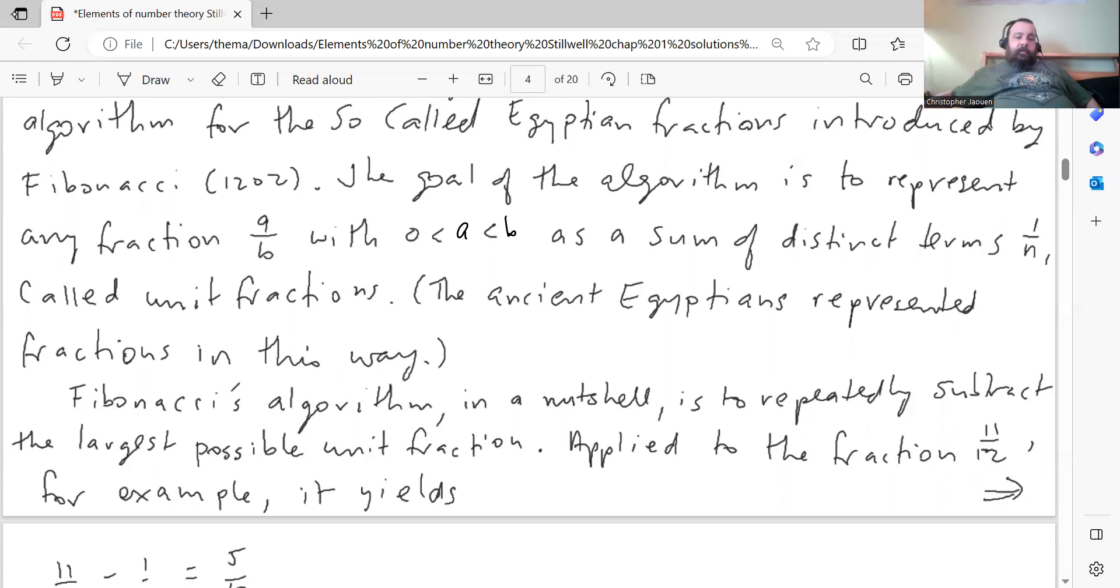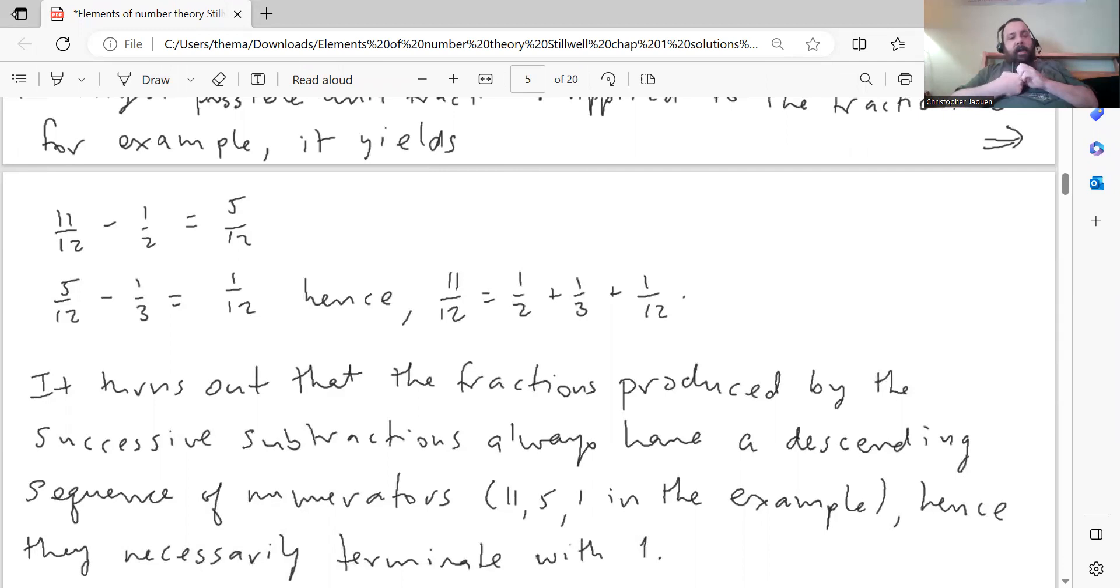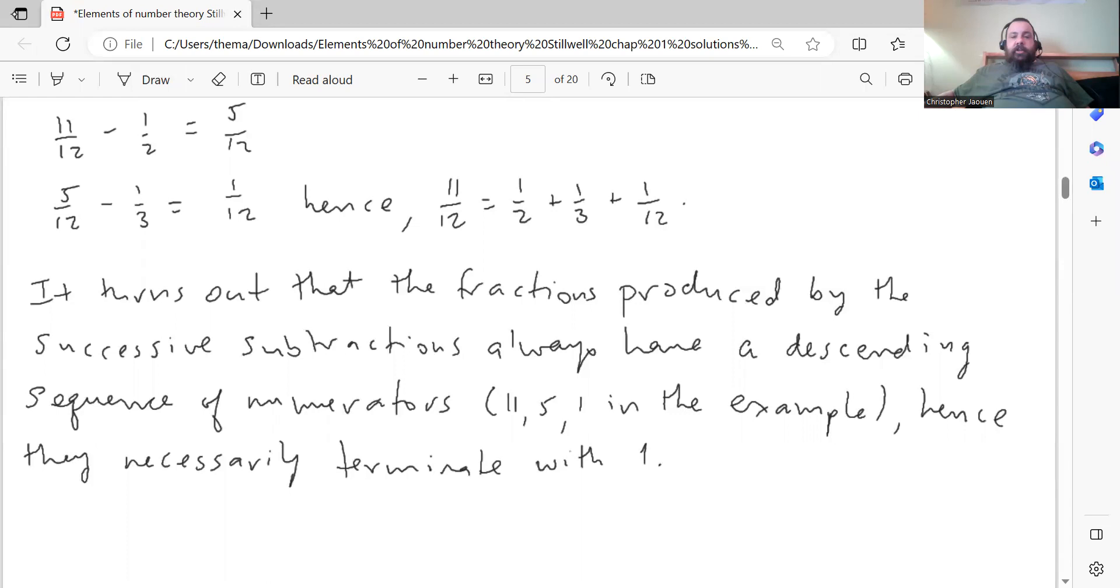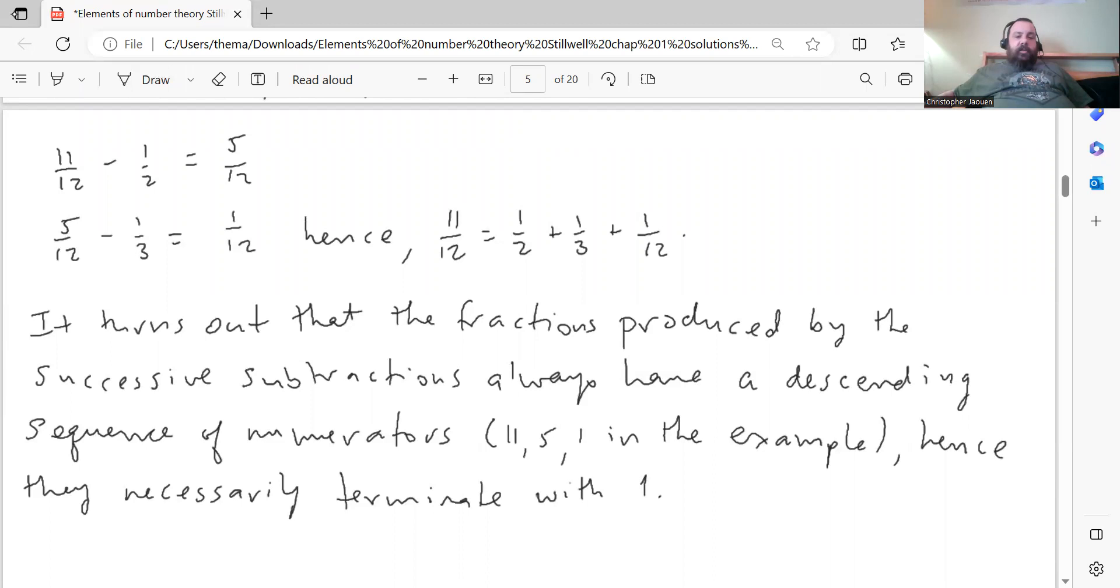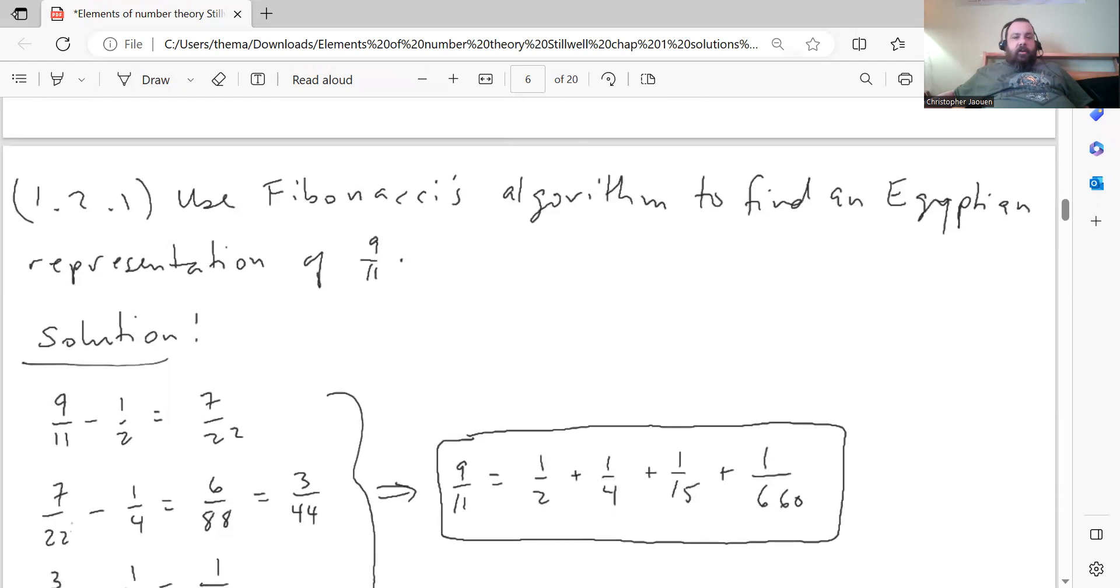For any fraction A over B with 0 less than A less than B, as a sum of distinct terms 1 over n called unit fractions. The ancient Egyptians represented fractions in this way. Fibonacci's algorithm, in a nutshell, is to repeatedly subtract the largest possible unit fraction. Applied to the fraction 11 over 12, it yields: 11 over 12 minus 1 half, which is the largest unit fraction you can subtract from it, gives you 5 over 12. From 5 over 12, you can subtract 1 third, which gives 1 over 12, which means that 11 over 12 can be written as 1 half plus 1 third plus 1 over 12.